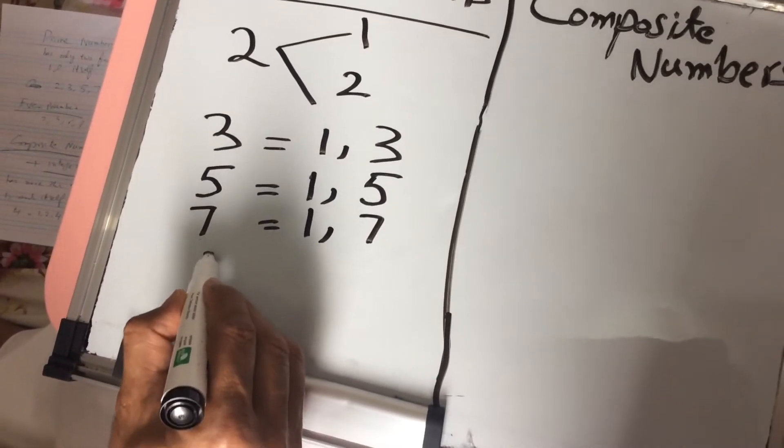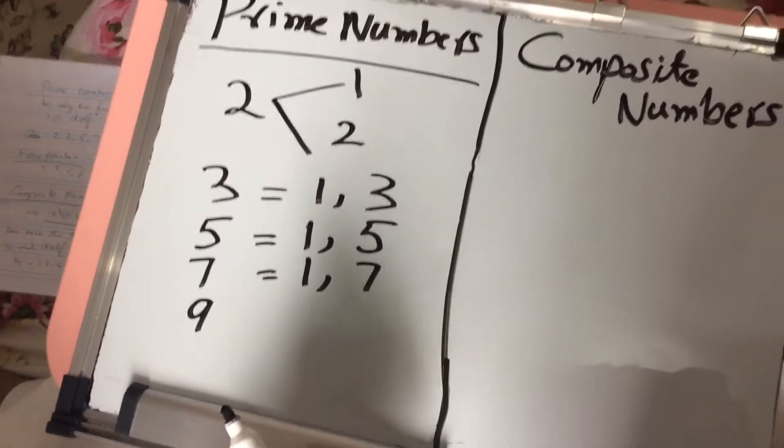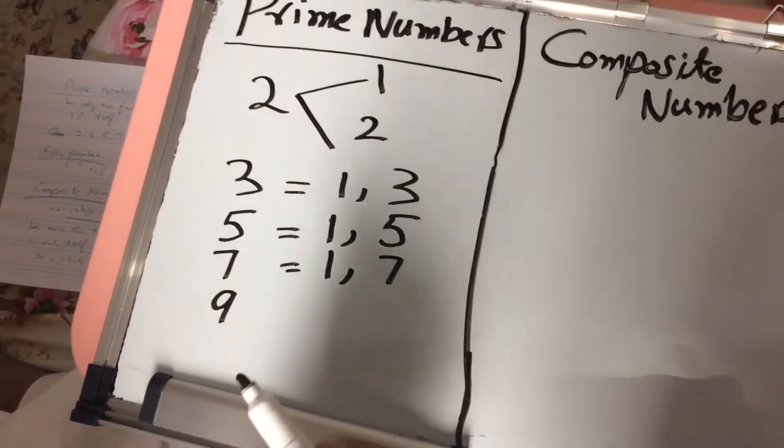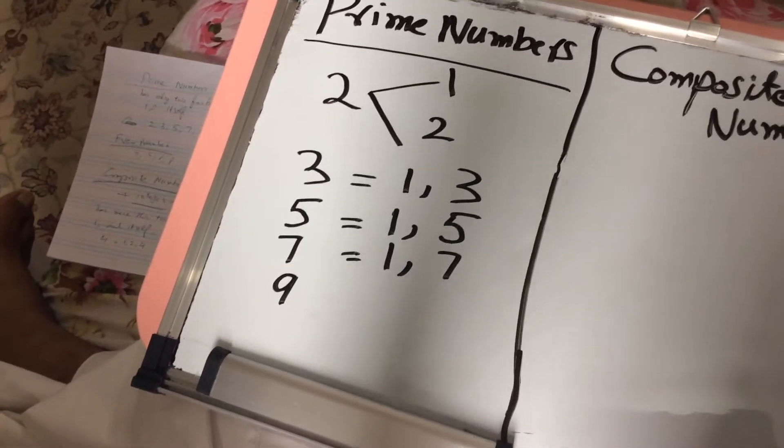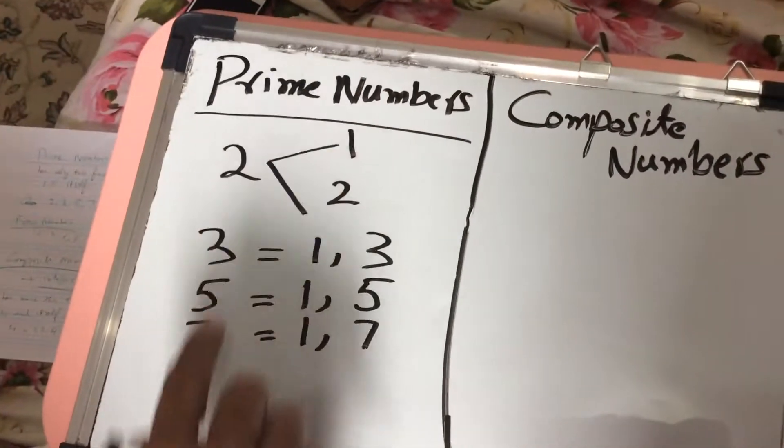Okay, now I'll give you another example: 9. Is 9 a prime number? No, it's not a prime number because it has more than 2 factors. It can be divided by 1, it can be divided by 3, and by 9. So it has 3 factors. So 9 is not a prime number.